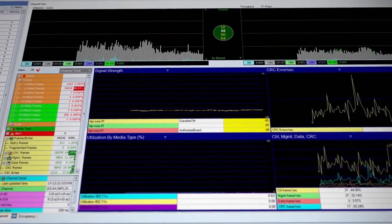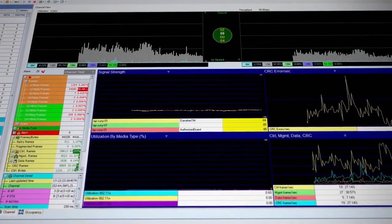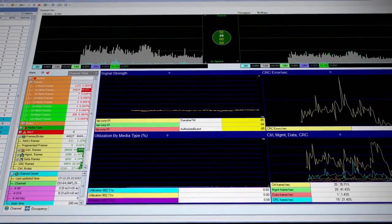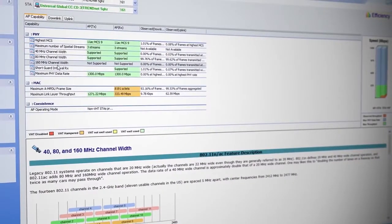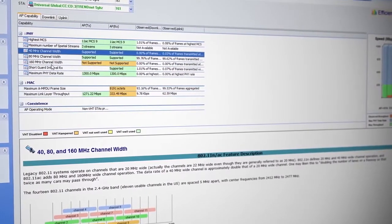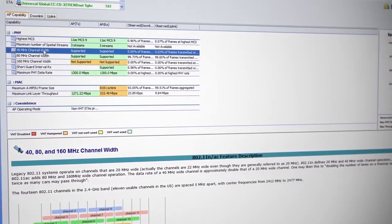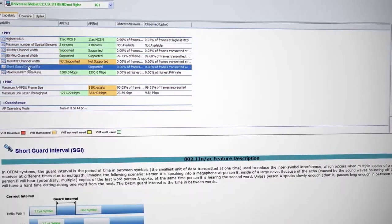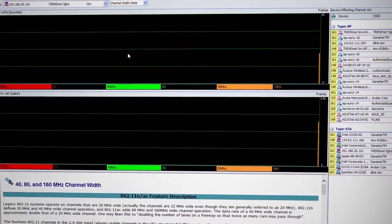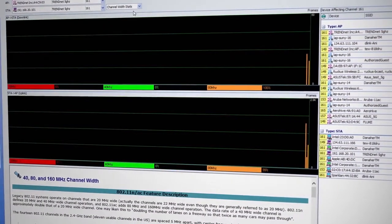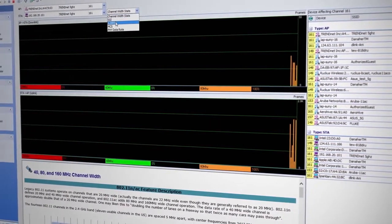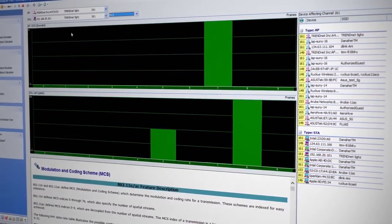AirMagnet Wi-Fi Analyzer Pro provides comprehensive channel utilization and throughput trending information and also includes the industry's only suite of active Wi-Fi troubleshooting tools to quickly pinpoint and solve wireless network problems including misconfigurations, overloads, hardware failures, roaming problems, and much more.